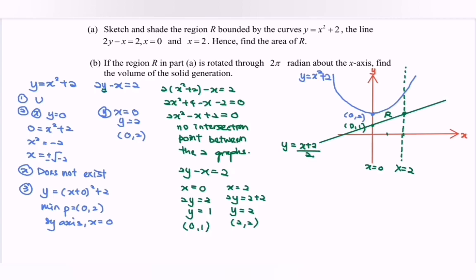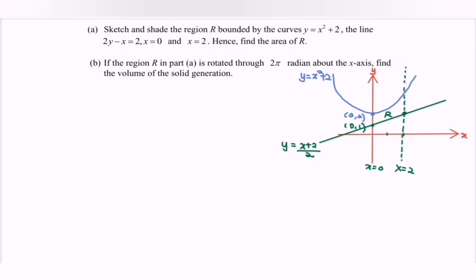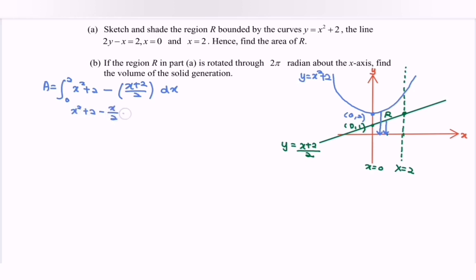For part (a), find the area. With respect to x, we use the longest minus the shortest. Area = ∫₀² [(x² + 2) − (x + 2)/2] dx. Simplifying inside the integral: x² + 2 − x/2 − 1 = x² − x/2 + 1. So Area = ∫₀² (x² − x/2 + 1) dx.